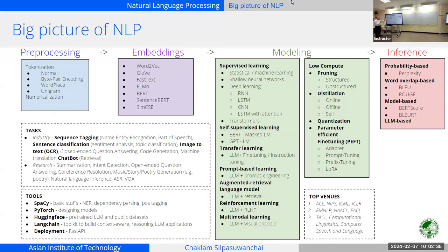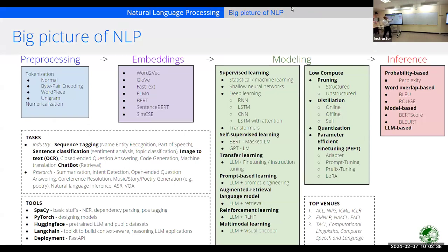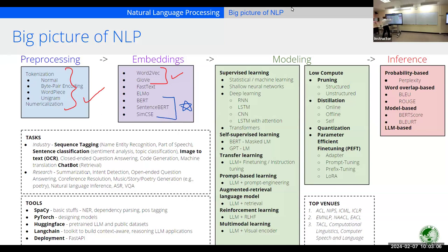Here's where we are in the course. We've finished the previous sections, and you already know the basic architectures and how to fit each of the NLP tasks on a neural network. Today we'll be looking at something called pre-trained models.